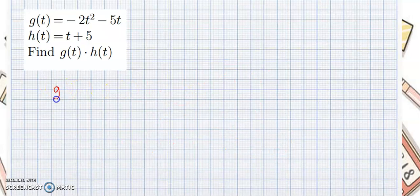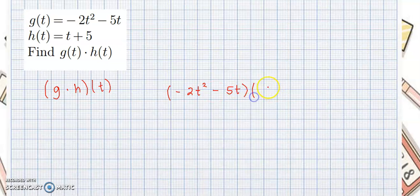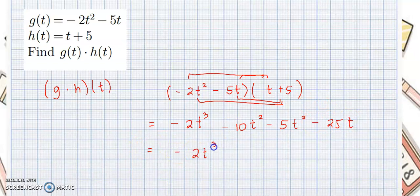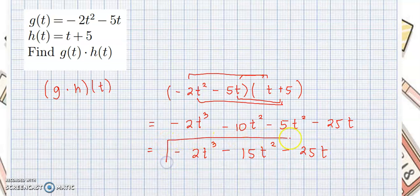For the next example, we wanted to know g times h of t, where the variable is t. So this would be negative 2t squared minus 5t, multiplied by t plus 5. Using the FOIL method: negative 2t cubed, minus 10t squared, minus 5t squared, minus 25t. Combining similar terms: negative 2t cubed minus 15t squared minus 25t. So here is the answer.